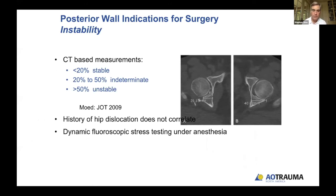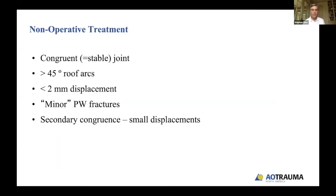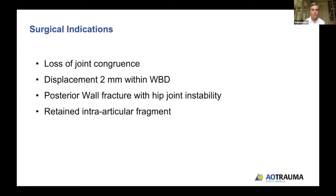Posterior wall fractures are unique — Dr. Johnson will cover these in detail. They're assessed based on size: greater than 50 percent of the diameter is pretty much universally unstable. The 20 to 50 percent range is more difficult; stress examination can be helpful there. Non-operative treatment can be considered for those with a congruent joint out of traction on all three plain x-ray views, a fracture outside the weight-bearing dome (greater than 45 degrees), less than 2mm of displacement, small posterior wall fractures, and in some cases secondary congruency.